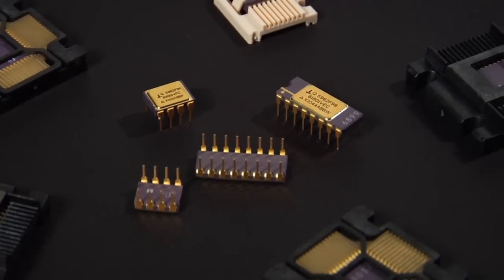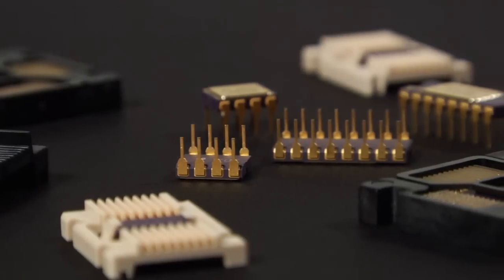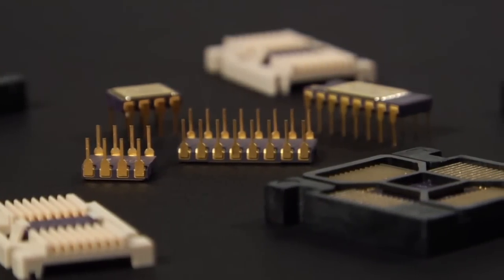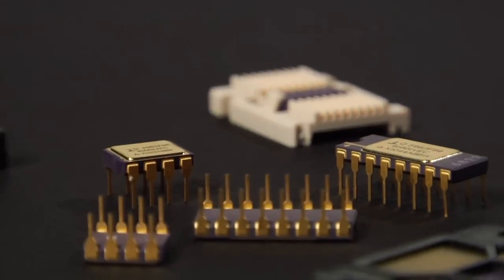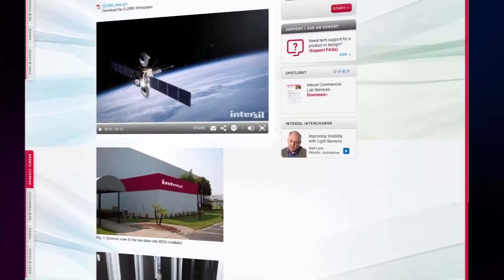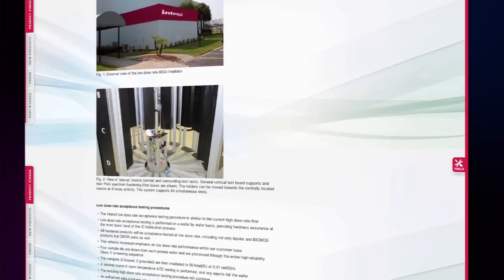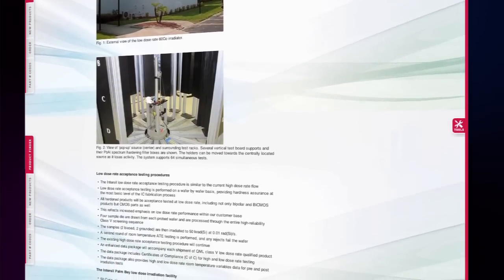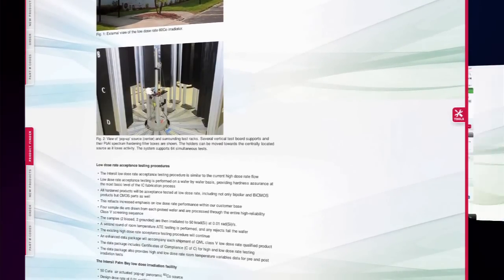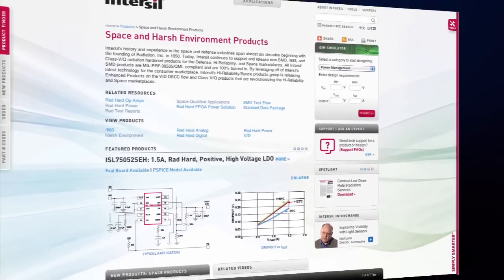We are also investing heavily in the space business to continue our leadership position. All new parts that have been developed or will be developed over the next year to two, three years will also be EH tested as well. On Intersil's website, you will find information about our low dose rate acceptance testing. You will find details on the flow, the irradiator itself, as well as the specific parts that are being tested and will be released on this EH flow.